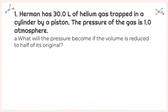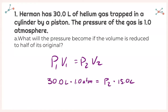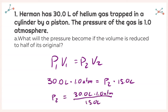Herman has 30 liters of helium gas trapped in a cylinder by a piston. The pressure of the gas is 1.0 atmosphere. For part A, it asks: what will the pressure become if the volume is reduced to half of its original? Writing down Boyle's Law: P1 times V1 equals P2 times V2. P1 is 1 atmosphere, V1 is 30.0 liters, V2 is 15.0 liters. Solving for P2: 30.0 times 1.0 atmospheres divided by 15.0 liters gives 2.0 atmospheres.